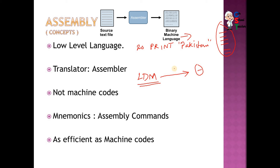The program before translation is called source code, and the program after translation is called object code. In the case of assembly language, object code size is equal to the source code. But in the case of high-level language, the object code or object program is larger than the actual program.